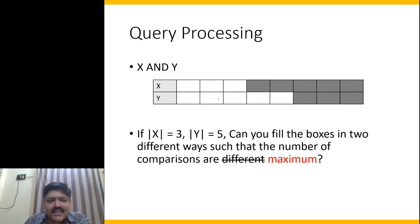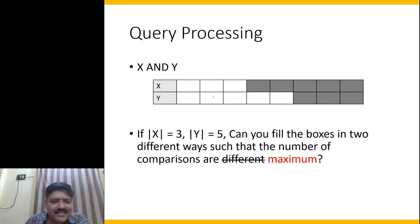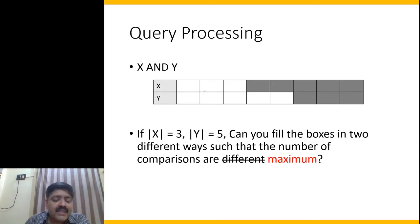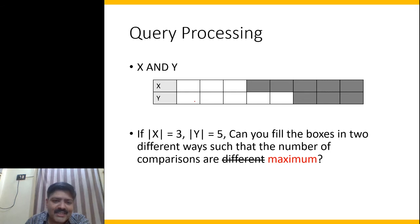Now consider another possibility: can you fill the boxes in two different ways such that the number of comparisons is maximized? Assuming there are only three documents containing X and five documents containing Y, what arrangement of document IDs would lead to the maximum number of comparisons? Please pause the video and think.